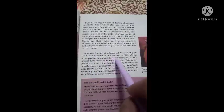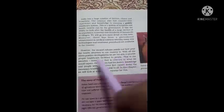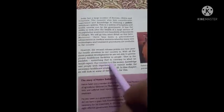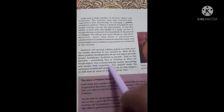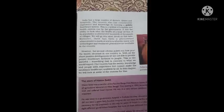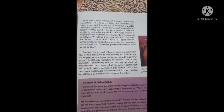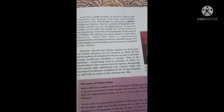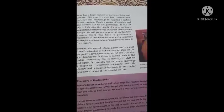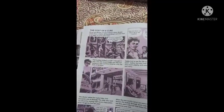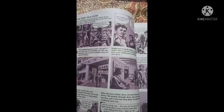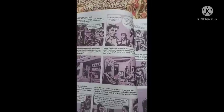However, the second column points out how poor the health situation in our country still is. With all the positive developments, we are not able to provide proper health care facilities to all people. This is the paradox — our country has the money, knowledge and experience, but cannot make the necessary health care available to all. In this chapter we will look at some of the reasons for this. So students, this is a story about the cost of a cure. We will stop here and continue in our next video. Thank you and take care.